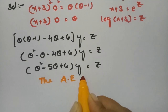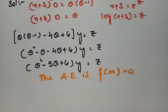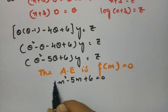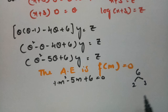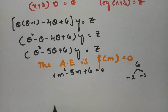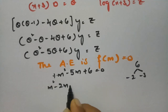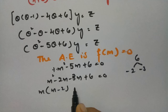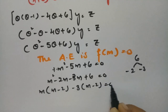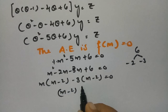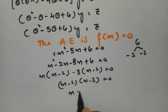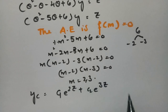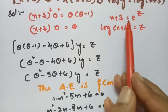The auxiliary equation is f(m) = 0. Replacing θ with m: m^2 - 5m + 6 = 0. Factoring: 1×6 = 6, factors are 2 and 3 giving -3 and -2, so m^2 - 3m - 2m + 6 = 0, which gives (m-2)(m-3) = 0. The roots are m = 2 and m = 3.